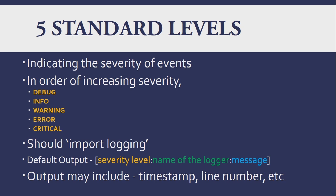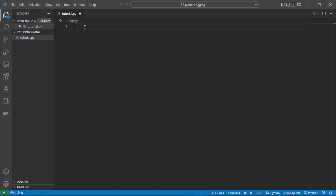The order of increasing severity is: debug, info, warning, error, and critical. We should import the logging library first and use these severity levels as needed. The default output looks like: severity level, colon, then the name of the logger, colon, and the message. The five severity levels are those five. The logger name is 'root' by default, and the message is what we specify.